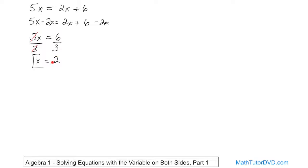If you take 2 and put it in here: 5 times 2 is 10, so you get 10 on this side. And if you put 2 here, 2 times 2 is 4, plus 6 is also 10. So you have 10 on the left and 10 on the right — that's correct.